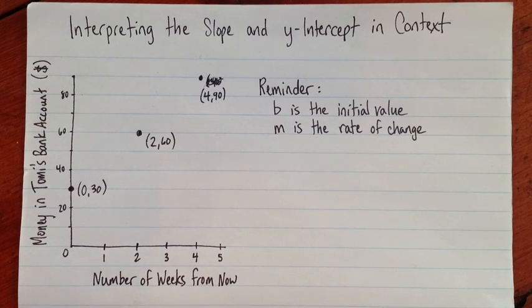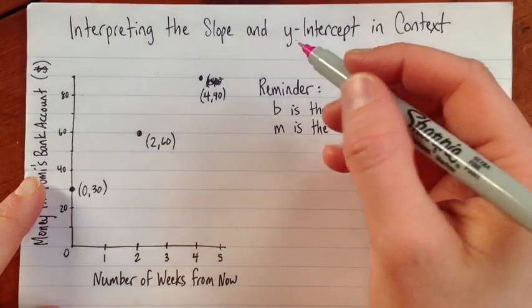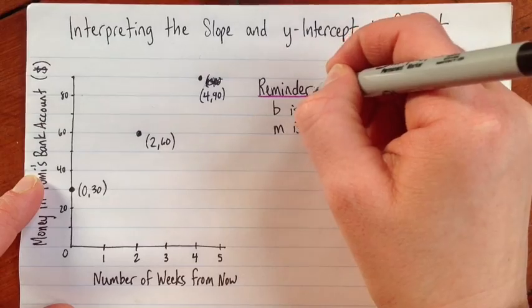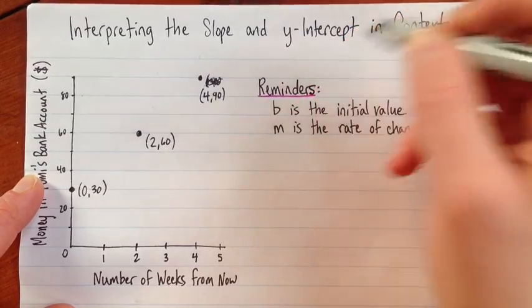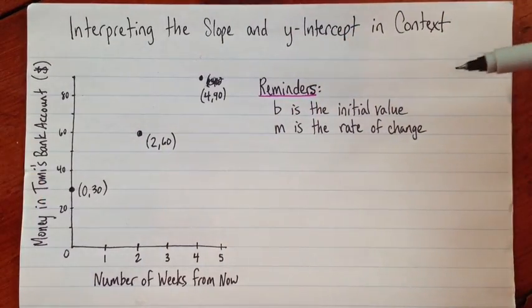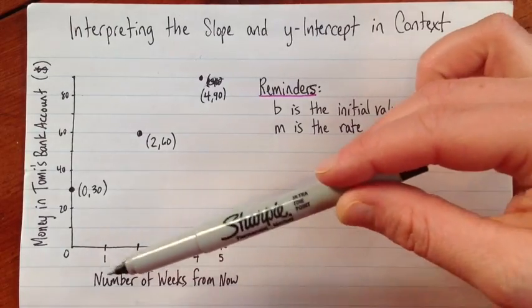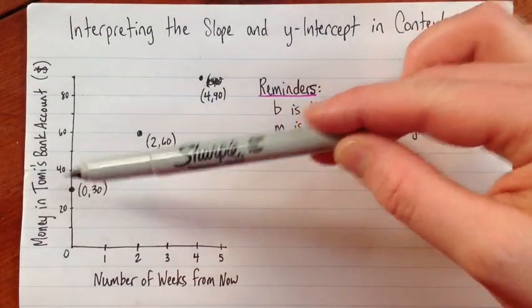So we're going to find the slope and the y-intercept of this, and then we're going to look at what they mean. But these are a few principles that are always useful. The b-value, the y-intercept, that's the initial value. And what I mean by that, if we've got time on the x-axis, that means it's the y-value at the start.